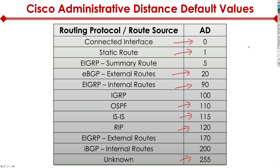Unknown is set to 255. Administrative distance represents believability. The connected interface is always the most predictable and believable because it is literally connected to the router — physically or logically. A static route is manually typed in by an administrator, so it's also very believable. With dynamic routing protocols, believability decreases, which means static routes will most likely be preferred over dynamic routing protocols.